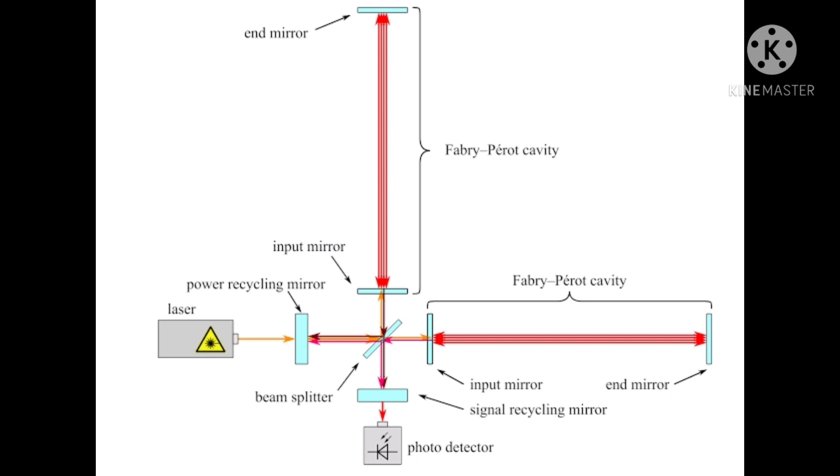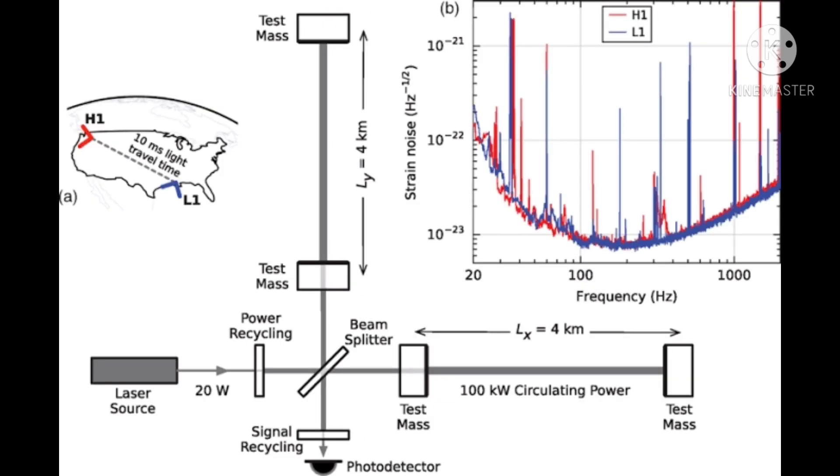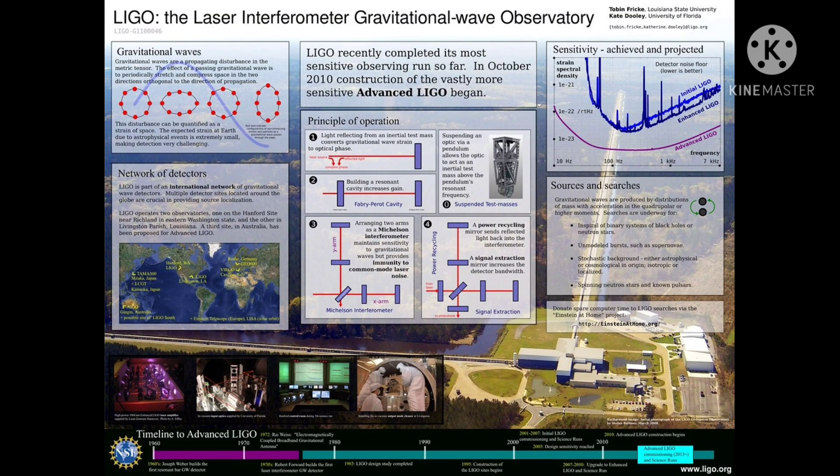After an equivalent of approximately 280 trips down that 4-kilometer length to the far mirrors and back again, the two separate beams leave the arm and recombine at the beam splitter. The beams returning from the two arms are kept out of phase so that when the arms are both in coherence, as when there is no gravitational wave passing through, the light waves subtract and no light should arrive at the photodiode.